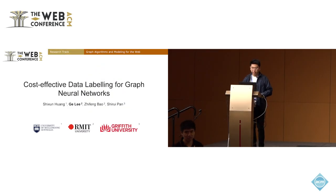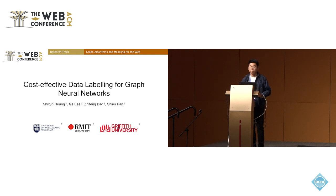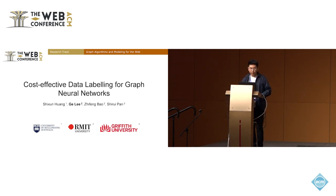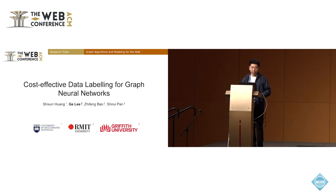Hello everyone, my name is Ge Li and our paper is titled Cost Effective Data Labeling for Graph Neural Networks, which studies the active learning problem on graphs. This is a joint work with Shushin Huang from University of Hong Kong, Zhifeng Bao from RMIT University, and Shuri Pan from Griffith University.